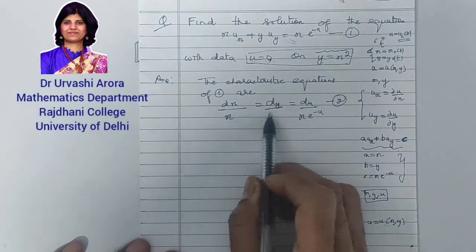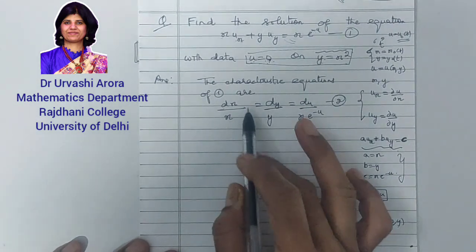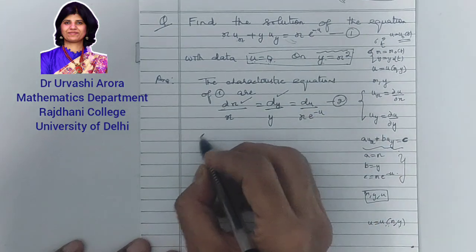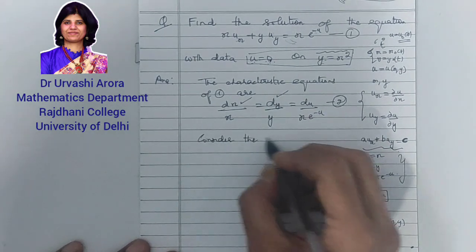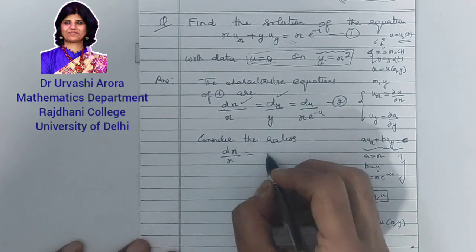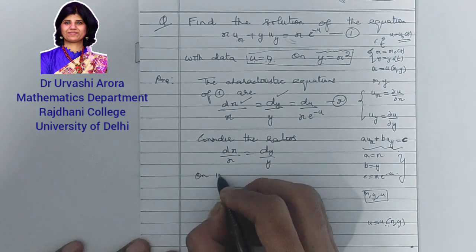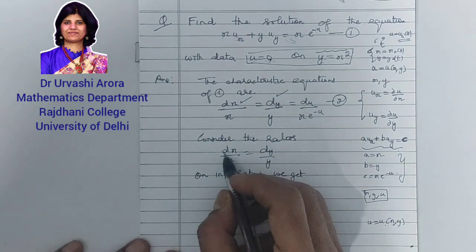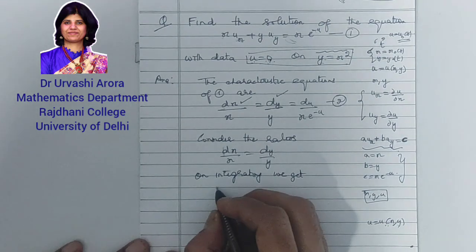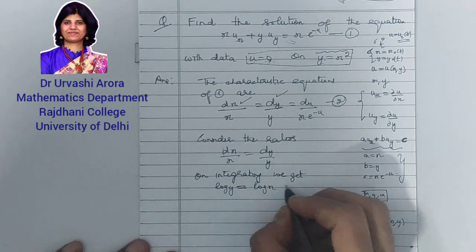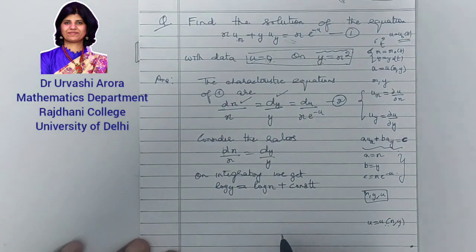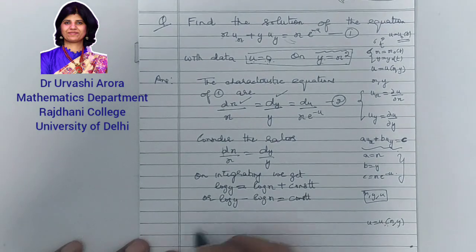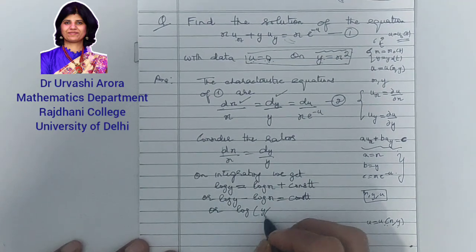We consider any two ratios from these characteristic equations and integrate them to find an integral. Let me consider the first and the second ratio: dx/x = dy/y. On integrating, we get log y = log x + constant, or log y − log x = constant, or log(y/x) = constant. Raising both sides by e gives y/x = constant.